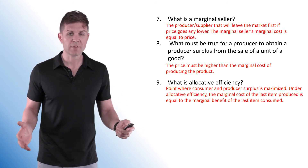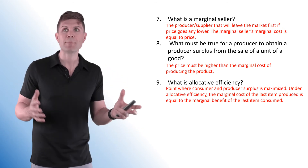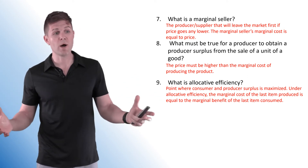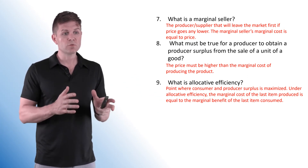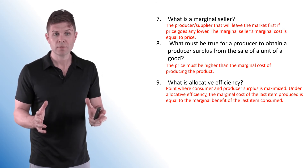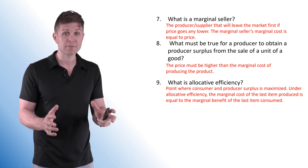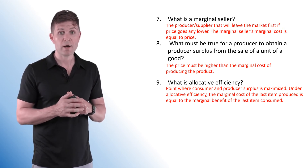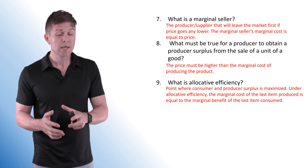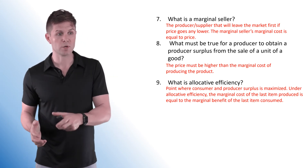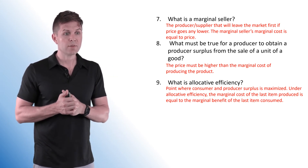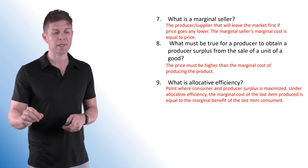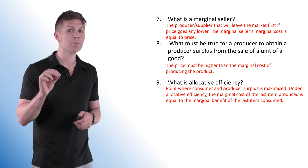What is allocative efficiency — also called the socially optimal price or socially optimal quantity? It's the point where consumer and producer surplus is maximized. Under most circumstances, it's where supply and demand intersect: where demand equals supply, where marginal cost equals marginal benefit, and the marginal cost of the last item produced equals the marginal benefit of the last item consumed. That's a very important wording.